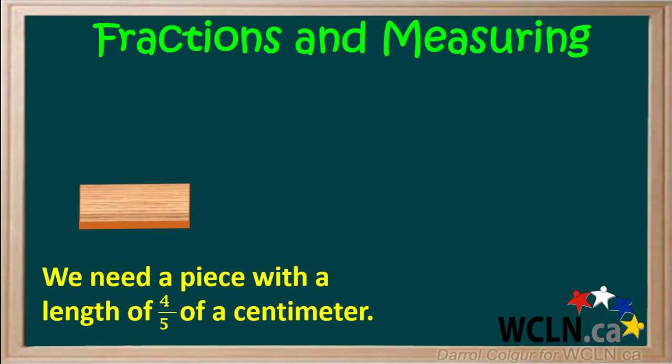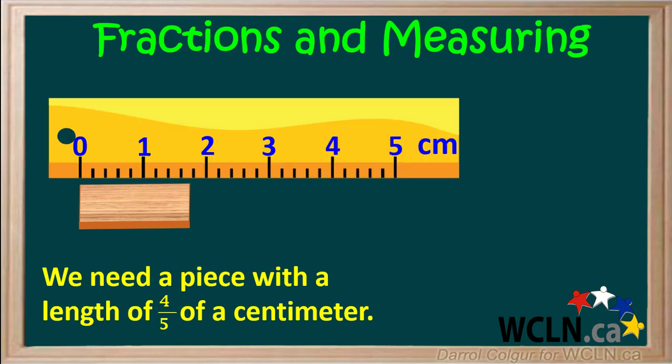Here we have a piece of wood, and we need the length to be four fifths of a centimeter. We can bring in a ruler like this. We see that on this ruler, each centimeter is divided into five parts. So we can make some fractions with a denominator of five. The distance between each small tick is one fifth of a centimeter, so we can label the ticks like this.